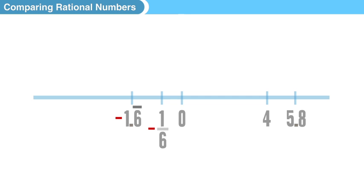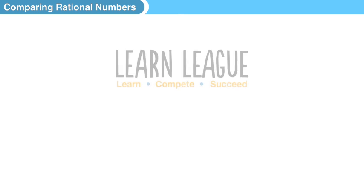Remember, the number line is just a visual representation of all real numbers, with the positive numbers stretching to the right and the negative to the left, all the way to negative infinity. So we want to know where are those numbers going to fall on the number line relative to each other, and that's how you compare rational numbers.